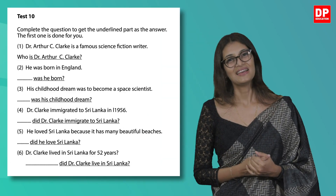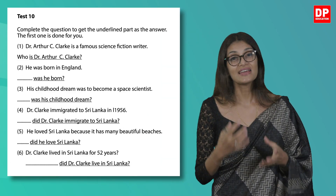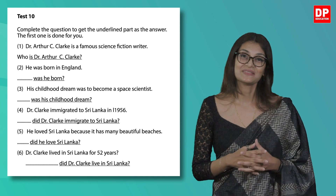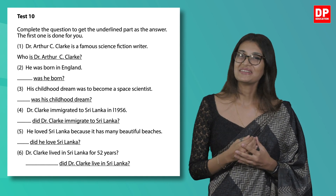That was easy, wasn't it? Let's now swiftly move on to Test 10. Complete the question to get the underlined part as the answer. The first one is done for you. It's about Dr. Arthur C. Clarke. Let's read the statements and figure out how to write the questions. Luckily, they have provided the question words at the beginning of the sentence to make it easy for you. Let's do it together.